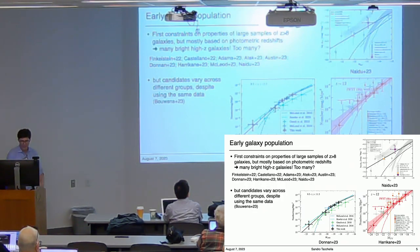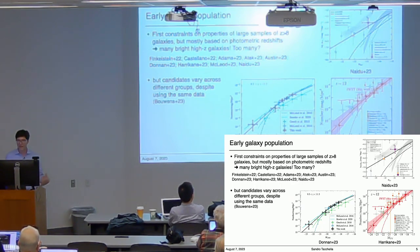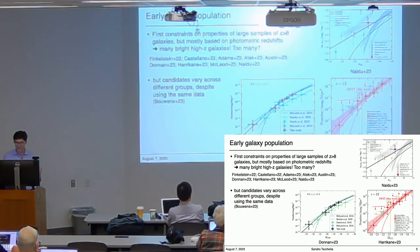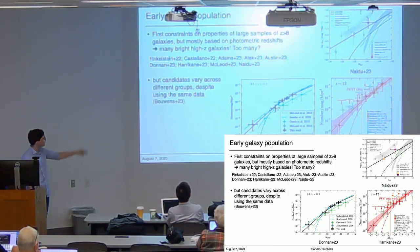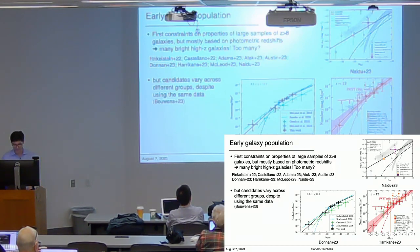As we heard this morning, there have been many interesting papers in JWST's first year trying to constrain the number densities of high-redshift galaxies above redshift 8. Overall there seems to be a high number density of very bright high-redshift galaxies—possibly too many of them. However, most data sets have been based on photometric redshifts, and as Richard Bouwens has shown, even with similar data sets, the candidate lists diverge quite significantly.